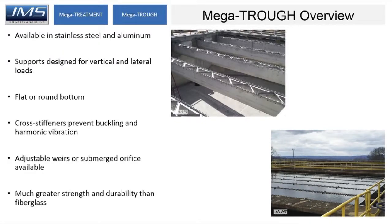Stainless steel is about 250 to 350 dollars per foot. Fiberglass is usually a bit less than that — roughly 10 to 15 percent less or so.